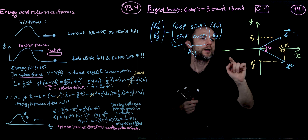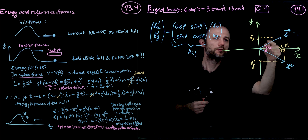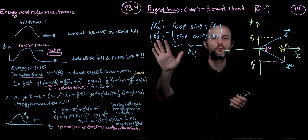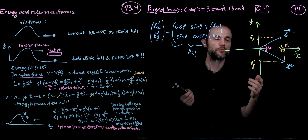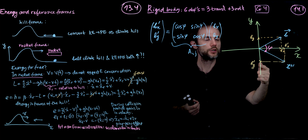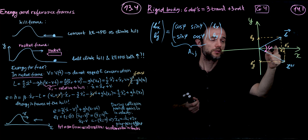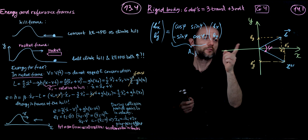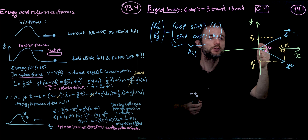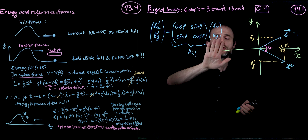Let us try and build up towards a description of a rigid body in 3D. Let's start with a two-dimensional case. Suppose we are looking at a vector, let's call it B, and we would like to rotate it. We're going to rotate it clockwise by an angle phi. So this is going to be vector B prime. Let's try and find the relationship between Bx, By, and Bx prime and By prime.